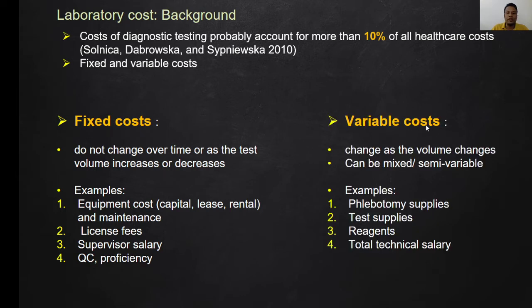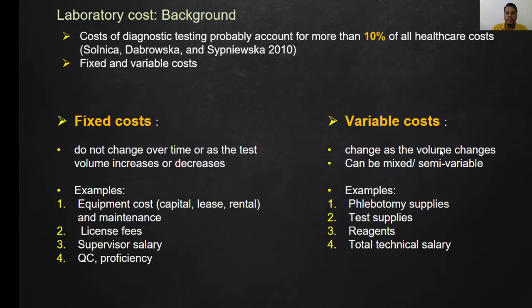Second, variable costs. Variable costs change as the volume changes and can be mixed or semi-variable. Examples include phlebotomy supplies, test supplies, reagents, and total technical salary. We can expect these costs to increase if the volume of samples received increases, and vice versa.